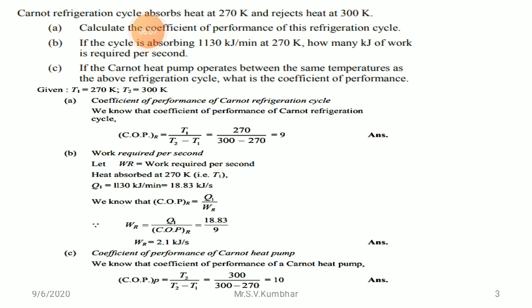The COP of the Carnot refrigeration cycle is TL upon (TH minus TL) = 270 upon (300 minus 270) = 270/30 = 9. COP of the refrigeration cycle is 9. This is the answer to the first question.